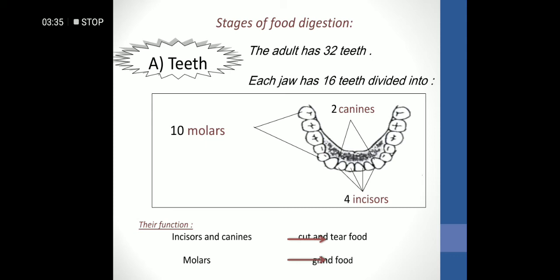They are divided into 10 molars, 4 incisors, and 2 canines in each jaw. The function of incisors and canines is to cut and tear food. We use molars for grinding food.